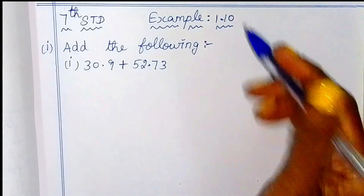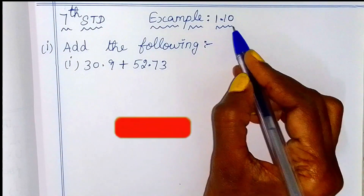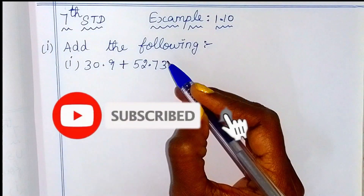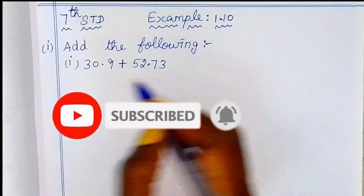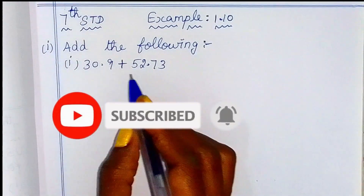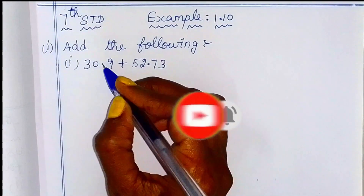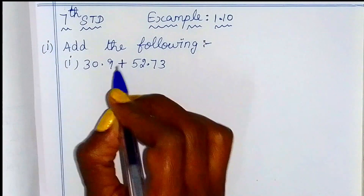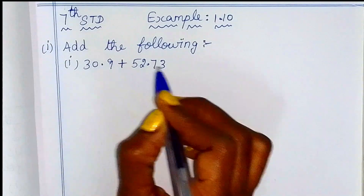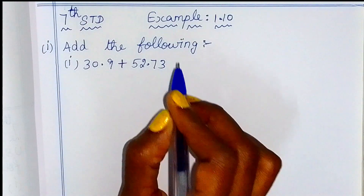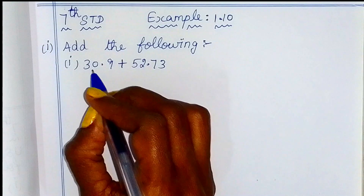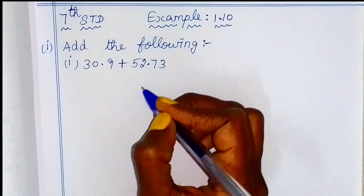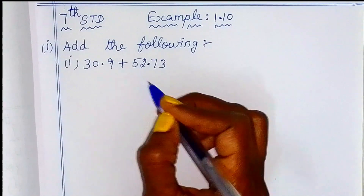Hello Children! In this example is 1.10. Add the following 2 subdivisions. First, add the decimal number. We can add the decimal point. How to arrange it, we can easily add the decimal point.